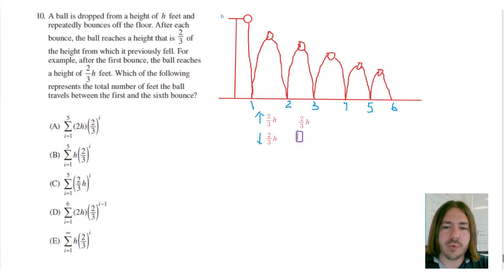And so one way that we can represent this repeated multiplication is with an exponent. So instead of having to write two-thirds times two-thirds, I can also just write this as two-thirds squared. I'm going to multiply that two-thirds twice. And again, it does travel that on the way up and the way down.